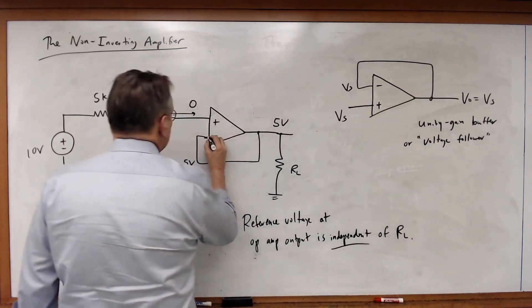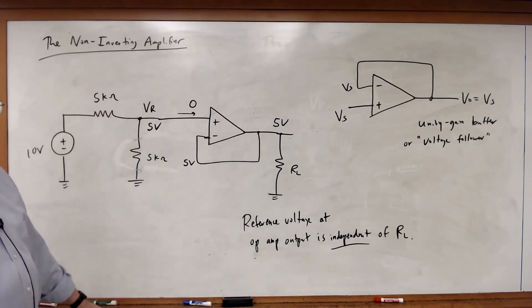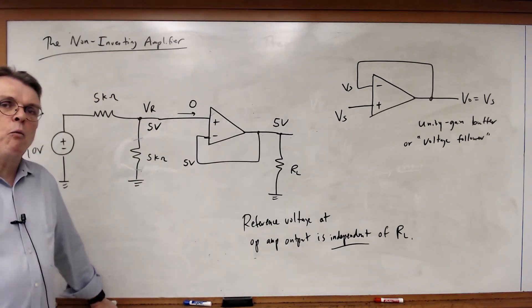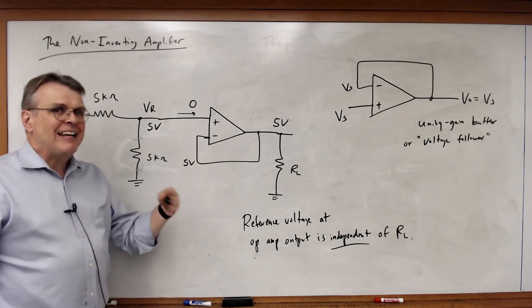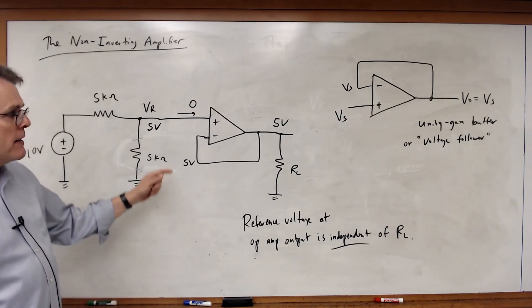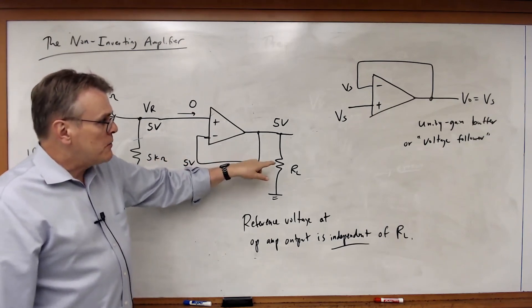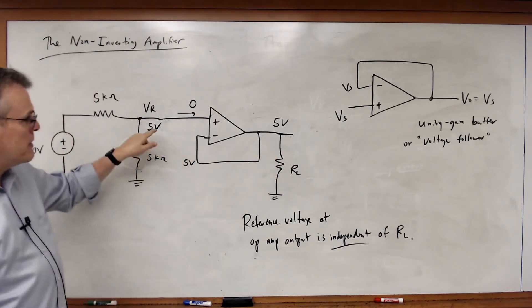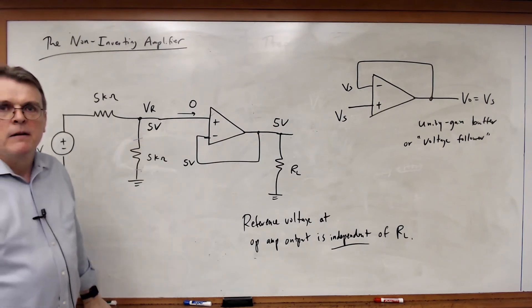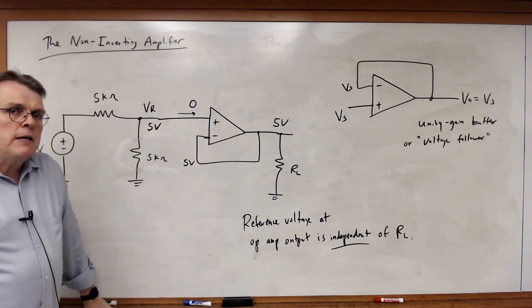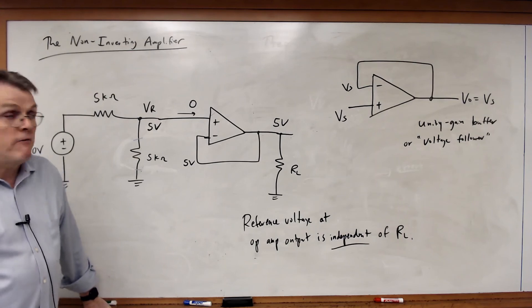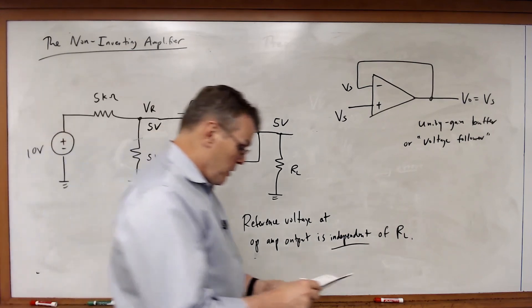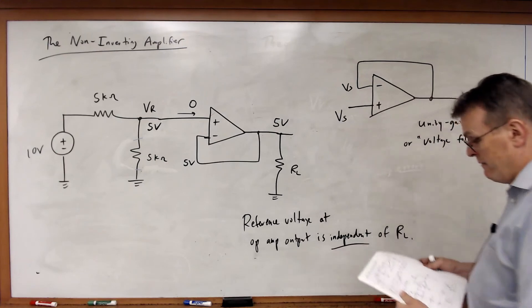So it turns out that the unity gain buffer, an amplifier with a gain of 1, turns out to be incredibly useful. Because we don't care about the fact we're not getting any amplification out of it. What we care about is that it allows us to isolate our load so that it doesn't cause a loading effect on this node. So you will see this kind of unity gain buffer or voltage follower used constantly. It's one of the most common circuits used in circuit design. Variations of this idea. So you will see this kind of thing used a very great deal.